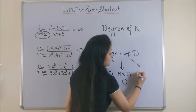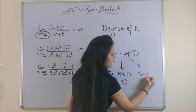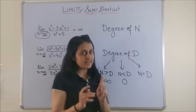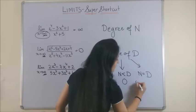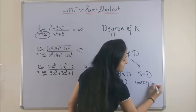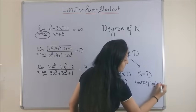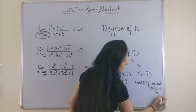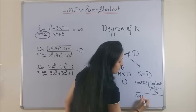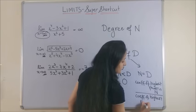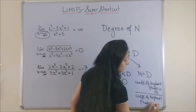And if the degree of the numerator and the degree of the denominator, they are equal, in that case, your answer is coefficient of the highest power in the numerator upon the coefficient of highest power in the denominator.